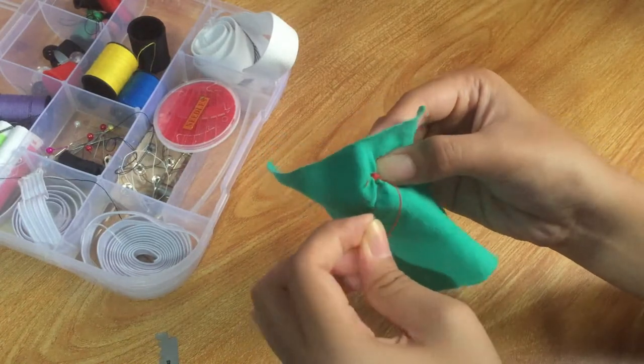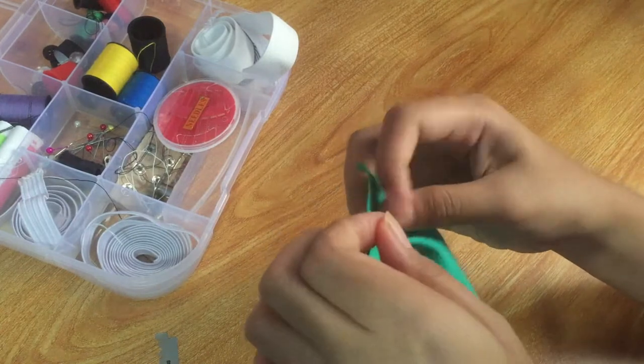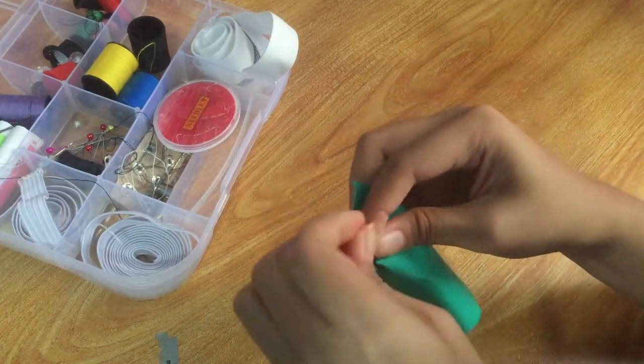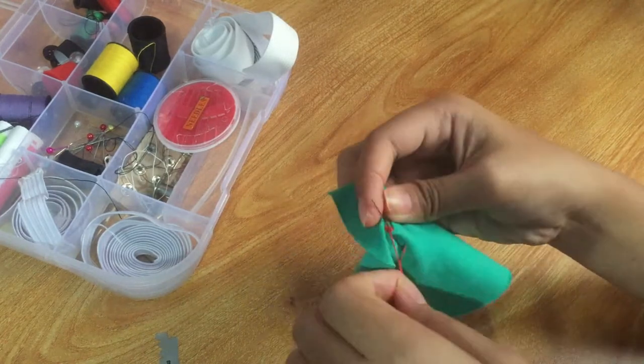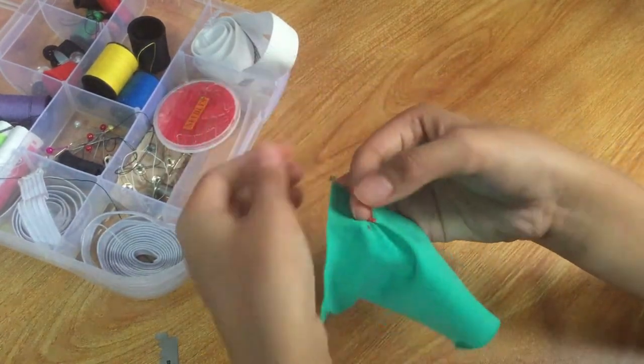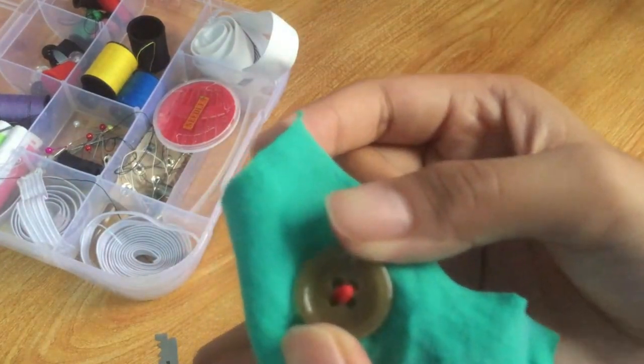Then, strengthen the button. Repeat the sewing process enough times to make sure that the button is securely in place. On the last stitch, push the needle through the material but not through the hole in the button.